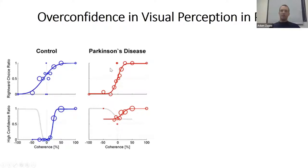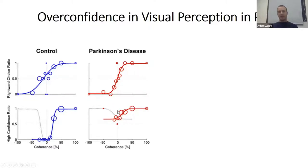We then set out to test confidence — do they overestimate their visual cues? We devised a confidence plot in addition to the psychometric plot. On the top row is the psychometric plot showing proportion of rightward choices as a function of coherence. At 100% coherence it's easy to tell dots are moving right; at minus 100% coherence all dots move left. We then also asked participants to report their confidence in their decision after each choice.